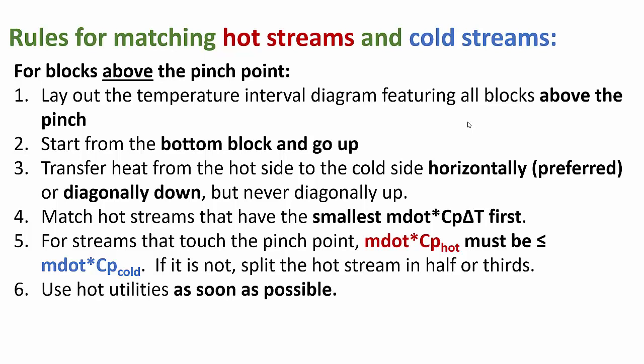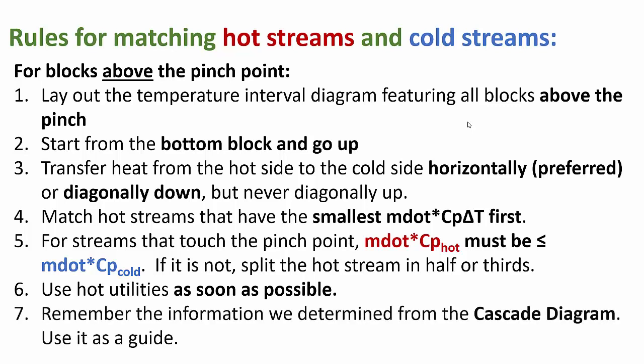We use hot utilities as soon as possible, but we never violate the rules above — we always prioritize rules 1 through 5 over rule 6. And we remember that the information from the cascade diagram is very helpful: it told us that we would need to supplement above the pinch with 100 kilowatts of heat somewhere.